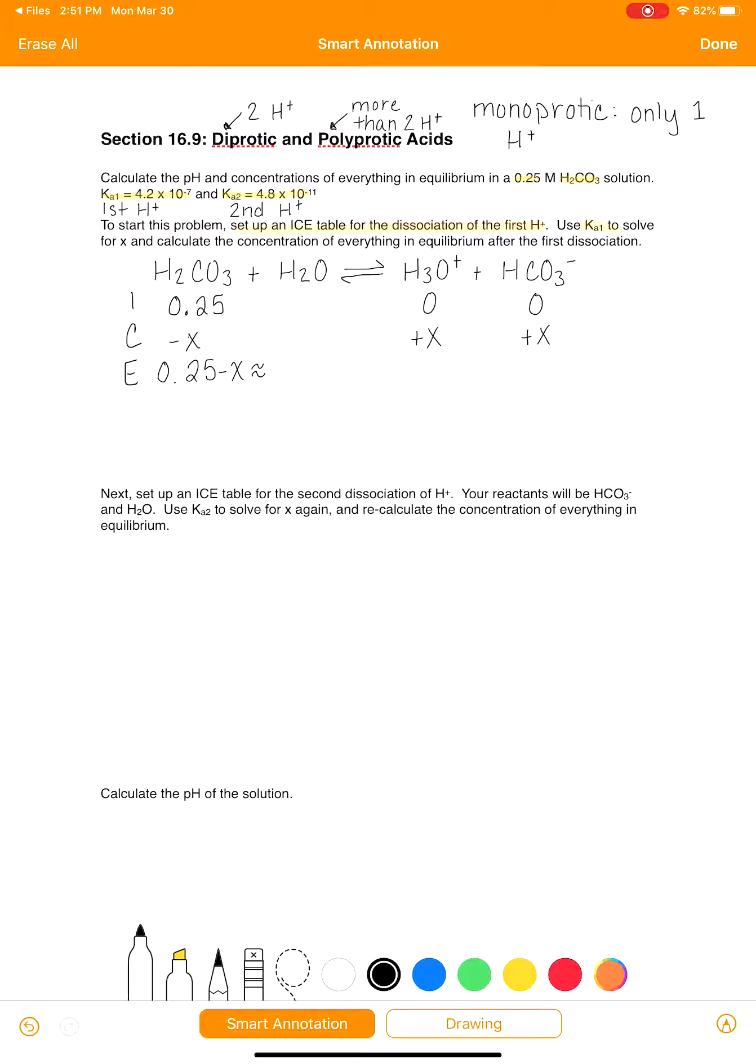And once this gets to equilibrium, we're going to have 0.25 minus X. And we're going to assume that X is really small relative to 0.25, so it's just going to be 0.25. And our products are going to be X and X. And we're going to use the equilibrium expression Ka1 to solve for X. So our equilibrium expression Ka1 is H3O plus times HCO3 minus over H2CO3.